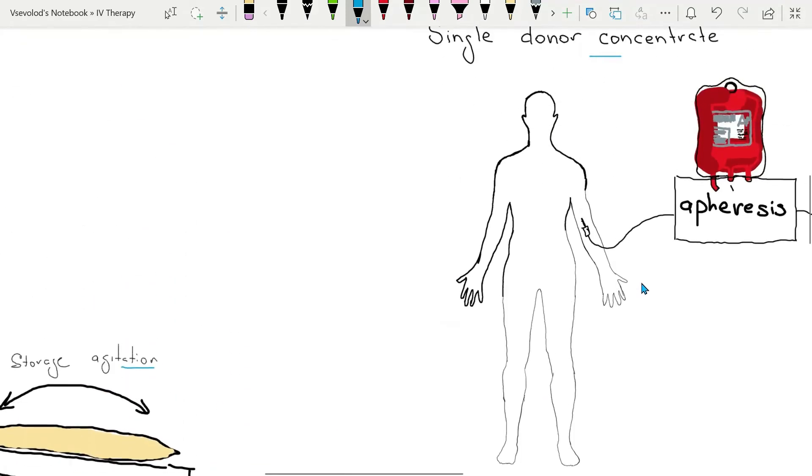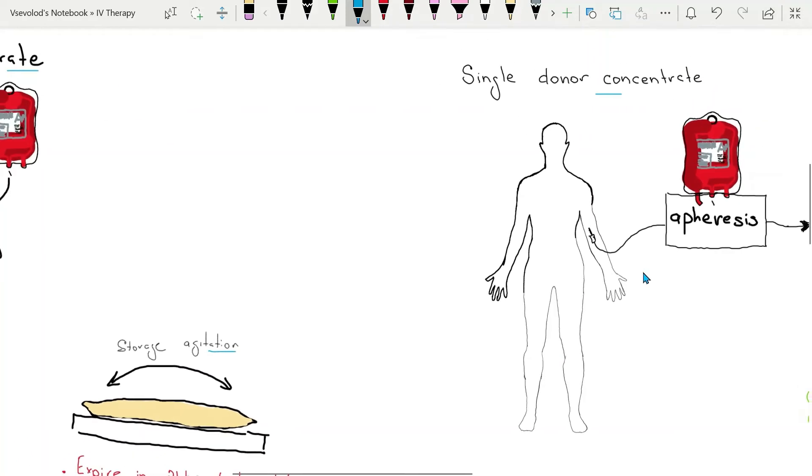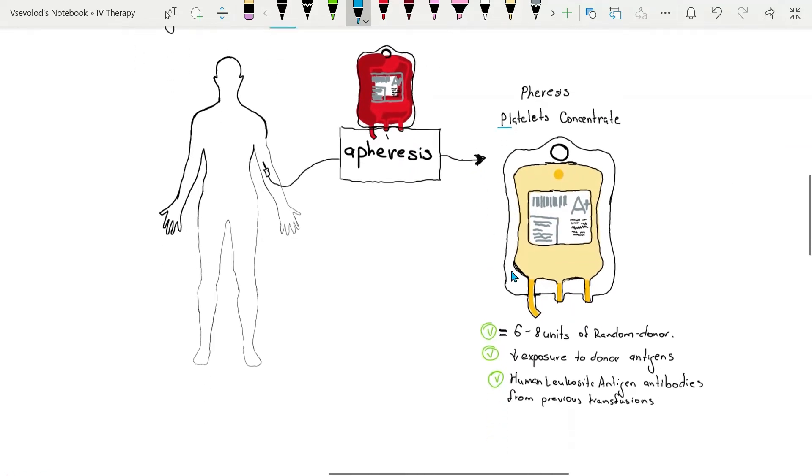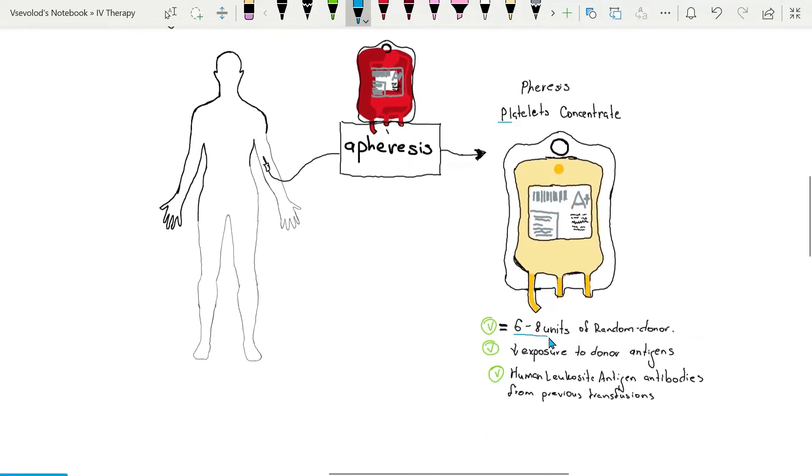Single donor platelet apheresis products are collected from single donor. A single apheresis unit is equivalent to 6 to 8 units of random donor platelets.